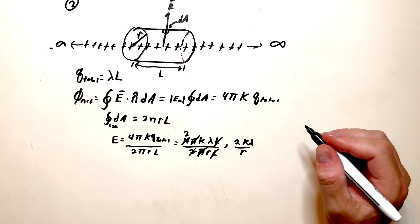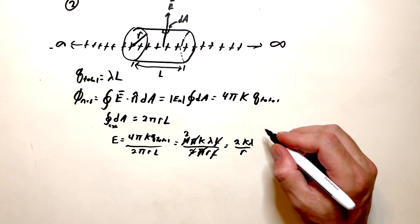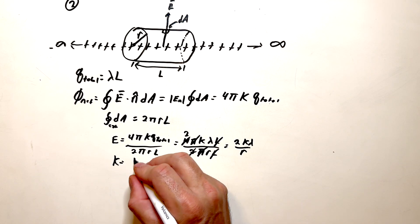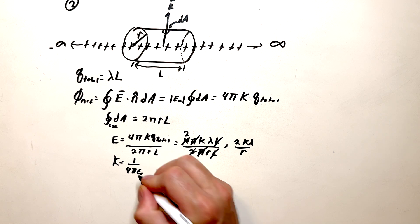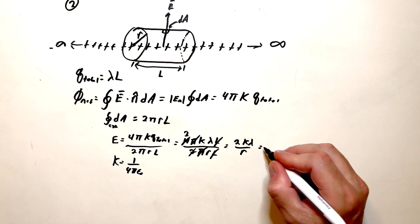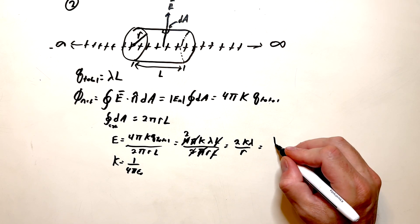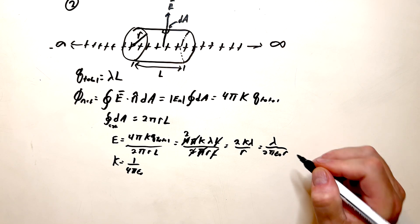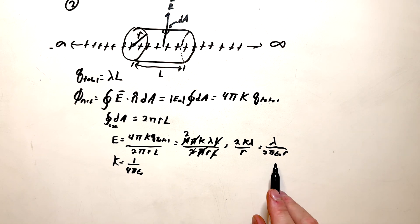Now, alternatively, we could use the relationship that k, which is equal to 1 over 4 pi epsilon naught. If I use that, this can also be written as lambda over 2 pi epsilon naught r. And the reason you might do that is because in some books they'll use 1 over 4 pi epsilon naught instead of k. And that is number 2.